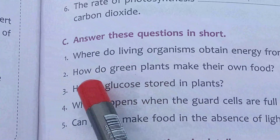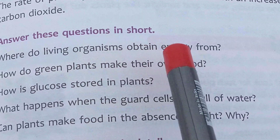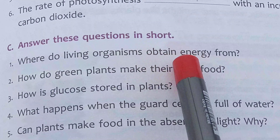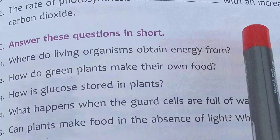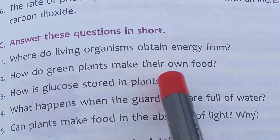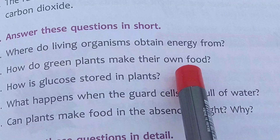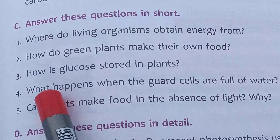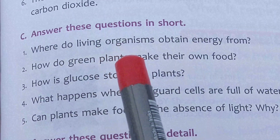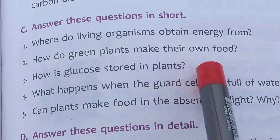Next, answer the questions in short. Where do living organisms obtain energy from? Living organisms obtain energy from green plants and from other animals. How do green plants make their own food? Green plants make their own food by the process of photosynthesis. How is glucose stored in plants? Excessive glucose is converted into starch and stored in different parts of the plant.